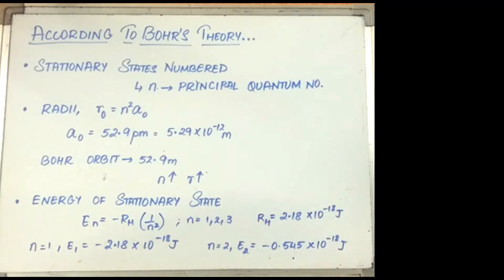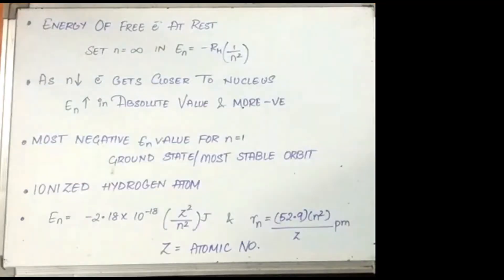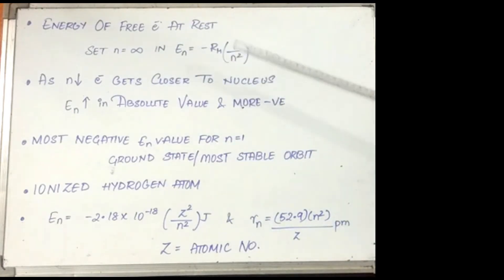The energy of the electron in the hydrogen atom has a negative sign for all possible orbits. This negative sign implies that the energy of the electron in the atom is lower than a free electron at rest. A free electron at rest — that is, an electron infinitely far away from the nucleus — is assigned an energy value of 0. As the n value decreases, the electron gets closer to the nucleus and E_n becomes larger in absolute value and more and more negative.